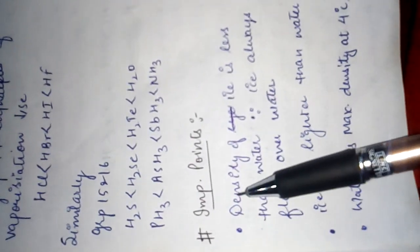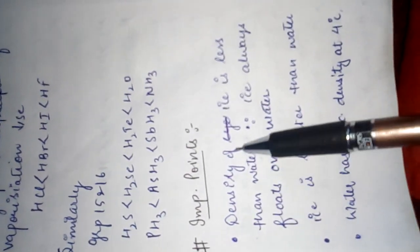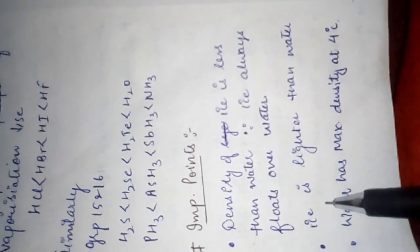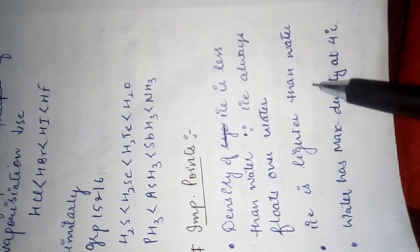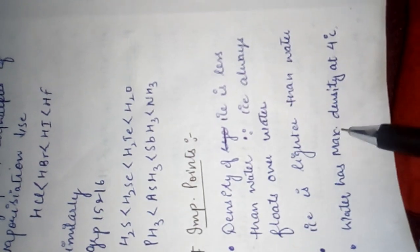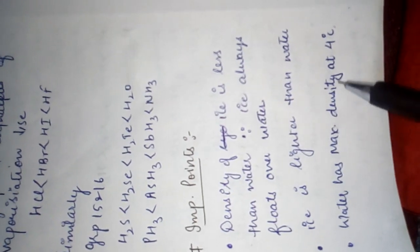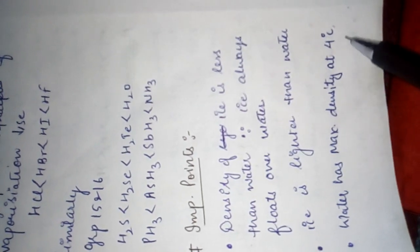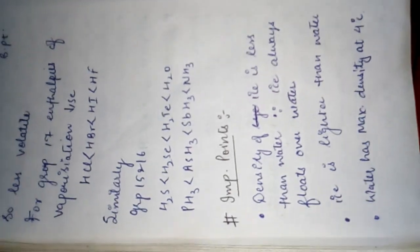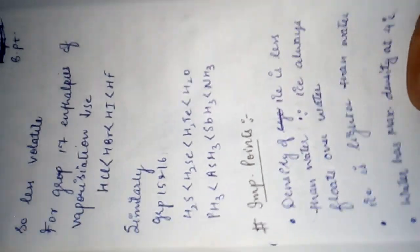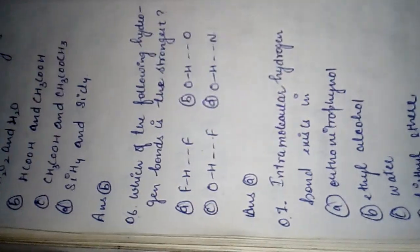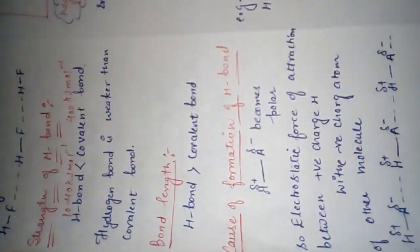Some important points: the density of ice is less than water, because ice floats on water — ice is lighter than water. Water has maximum density at 4 degrees Celsius. Now we are going to discuss some MCQs related to hydrogen bonding.